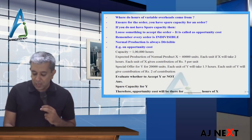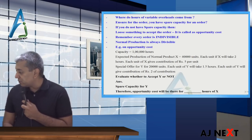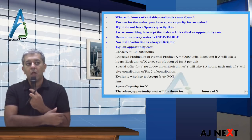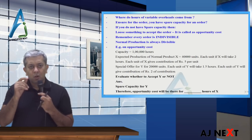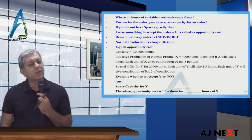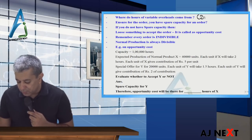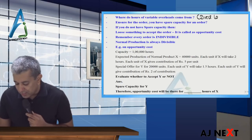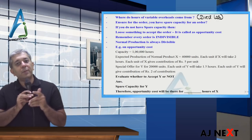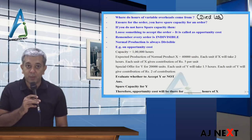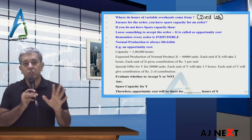Now, where do hours of variable factory overheads come from? Variable factory overheads will by default come from things like electricity — electricity is used when the worker works. So therefore, hours of variable overheads, if you don't say anything, it will come from direct labor. The hours of variable overheads will be applied unless and until stated otherwise in the question.